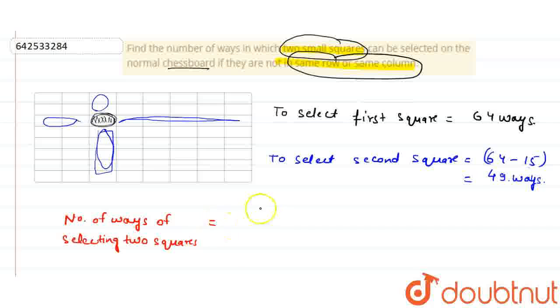So this can be 64 cross 49 by 2. And now this by 2, why I am dividing this multiplication by 2? The reason behind it is,